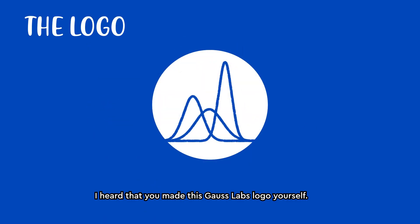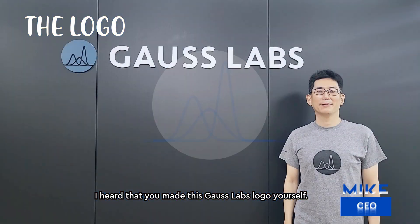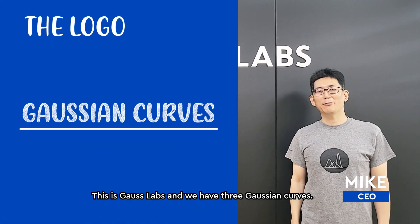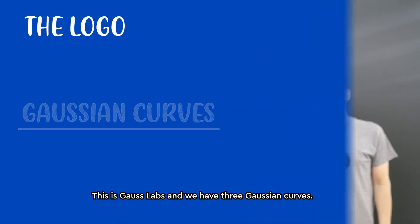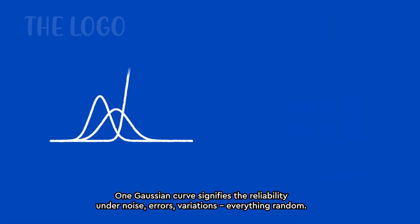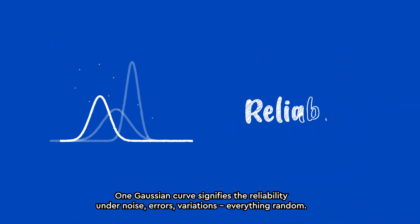I heard that you made this Gauss Labs logo yourself. What does it mean? This is Gauss Labs and we have three Gaussian curves. One Gaussian curve signifies the reliability of the noise, errors, variations, everything random.